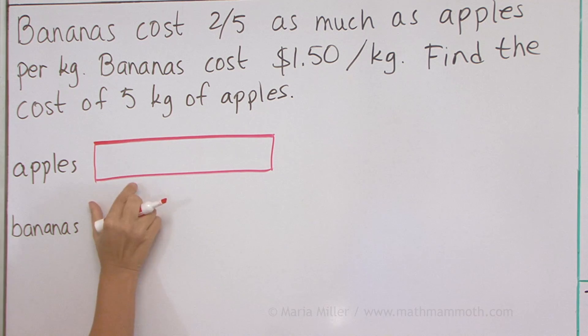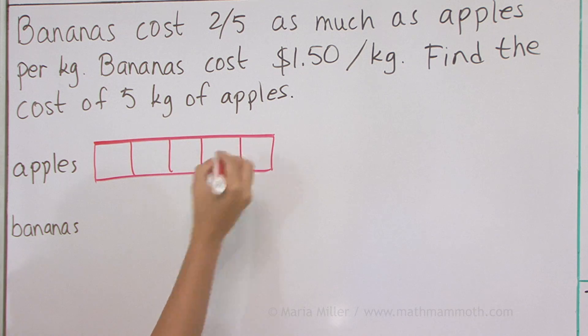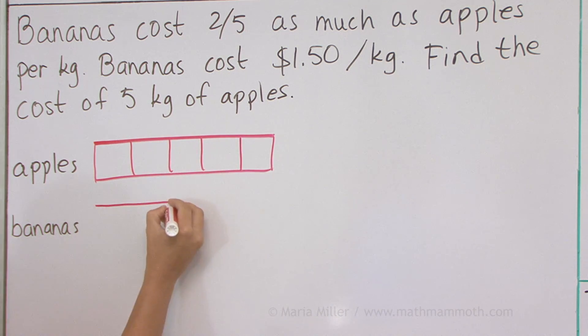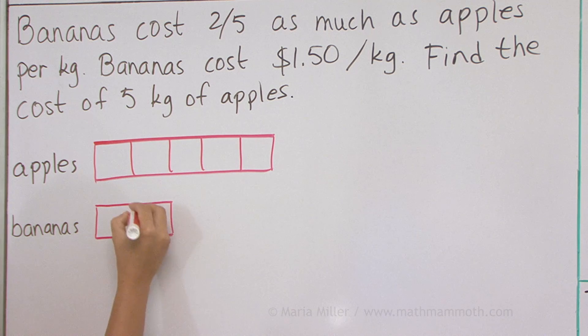I need to divide the price of apples into five parts. And then the price of bananas is only two-fifths, or two of those parts. Like that.